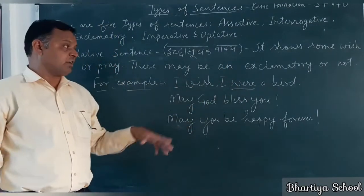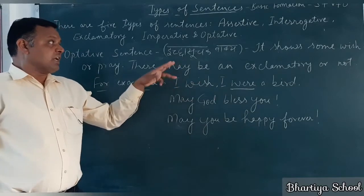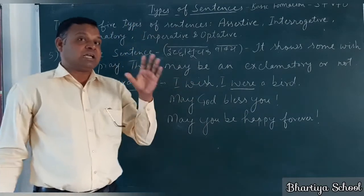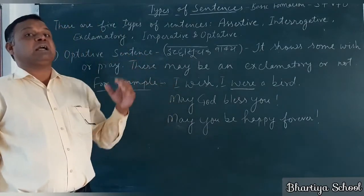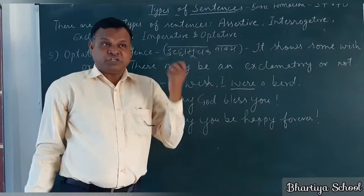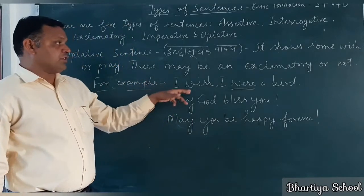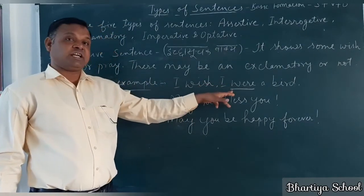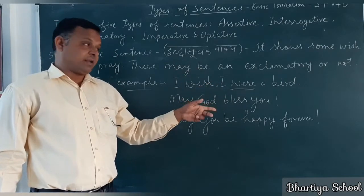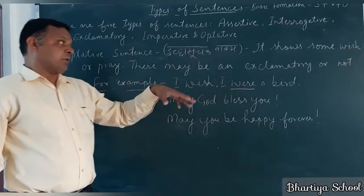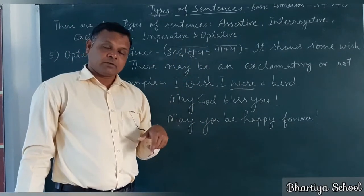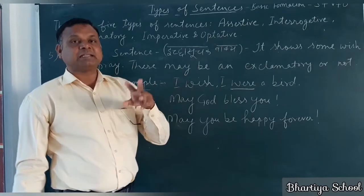This is the identification that this sentence is an optative sentence — the person is wishing about something impossible. 'I wish I were a bird' implies an impossible wish. So basically, if 'were' is there with 'I', that is the identification of an optative sentence.